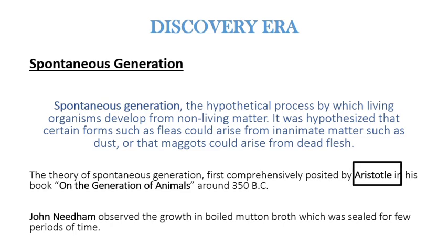This theory was first proposed by Aristotle in his book on the generation of animals, around 350 BC. Aristotle said non-living matter contained a vital heat called Pneuma — the concept of the breath of life — later translated as anima, meaning soul. He also proposed that a combination of four elements made up all life: earth, air, fire, and water. He suggested that animals and plants could arise from earth and liquid because there was vital heat within all air.